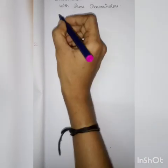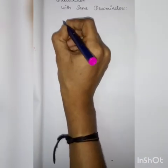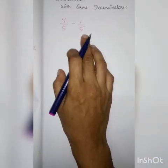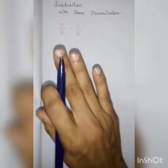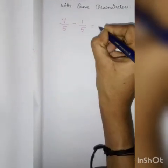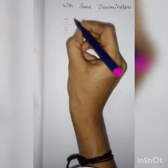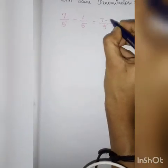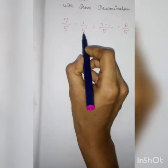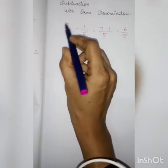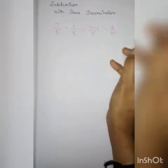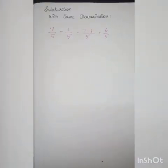We are going to do subtraction with the same denominator. Example: 7 by 5 minus 1 by 5. Here, both fractions have the same denominator. Like addition, we do subtraction the same way — only the operation changes. If denominators are same, write the denominator once — 5 — and directly subtract the numerators: 7 minus 1 is 6. So the answer is 6 by 5.